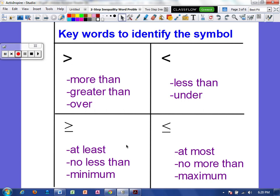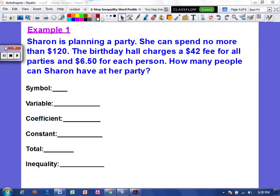So keep this ready, and this is in your notes. Make sure you refer to this as we read through the word problem so that you can identify the symbol we should use. Right, example one. Sharon is planning a party. She can spend no more than $120. The birthday hall charges a $42 fee for all parties and $6.50 for each person. How many people can Sharon have at her party?